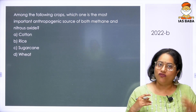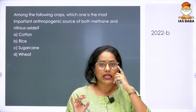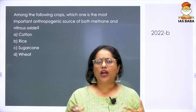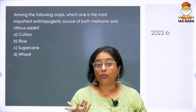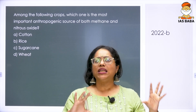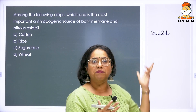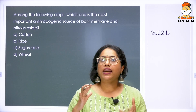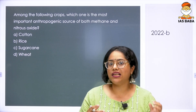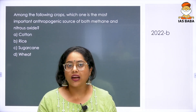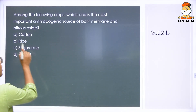Cotton grows in black soil and wheat in normal loamy soils. Both crops do not have high water requirements — wheat grows even in winter. These crops do not have the peculiar conditions that cause methane and nitrous oxide. Sugarcane requires water and a lot of fertilizer, so nitrous oxide release does happen with sugarcane. But the crop that releases both methane and nitrous oxide is rice.